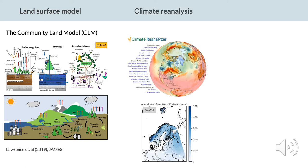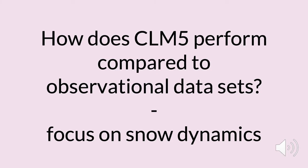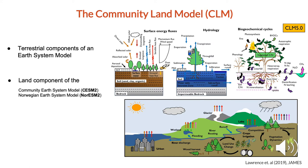In this study we are also using climate re-analyses and the satellite remote sensing product, particularly from MODIS. Our first question is how does CLM5 perform compared to observational datasets, and I will focus on the snow dynamics aspect. The Community Land Surface Model is important for us because it is the land component of the two Earth System models CESM2 and NORESM.